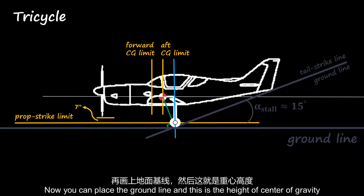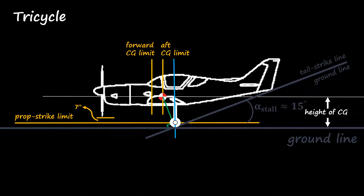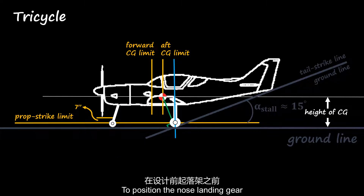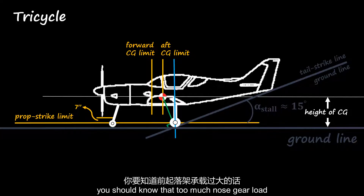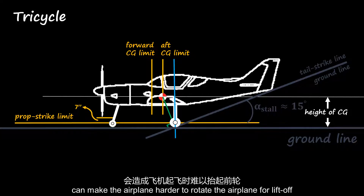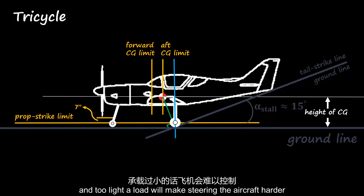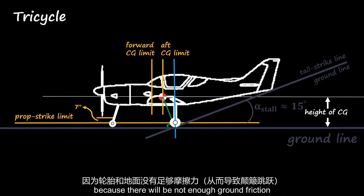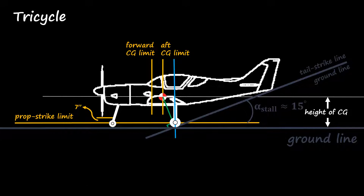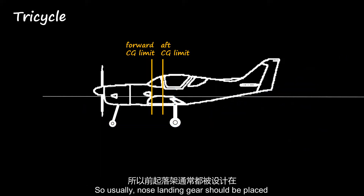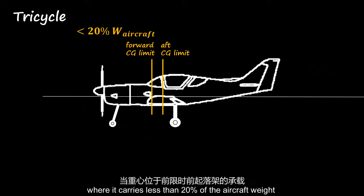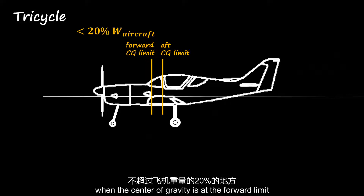Now you can place the ground line — this gives you the height of the center of gravity, which will be useful later. To position the nose landing gear, you should know that too much nose gear load can make the airplane harder to rotate for liftoff, and too little load will make steering harder because there won't be enough ground friction. So the nose landing gear should generally be placed where it carries less than 20% of the aircraft weight when the center of gravity is at the forward limit.